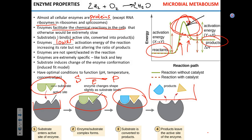Will enzymes change the outcome of the reaction? Not really. It's still the same reactants and the same products, but the conversion is much faster. Enzymes increase the rate of the reaction but do not affect the ratio of products. They change rate, not ratio.